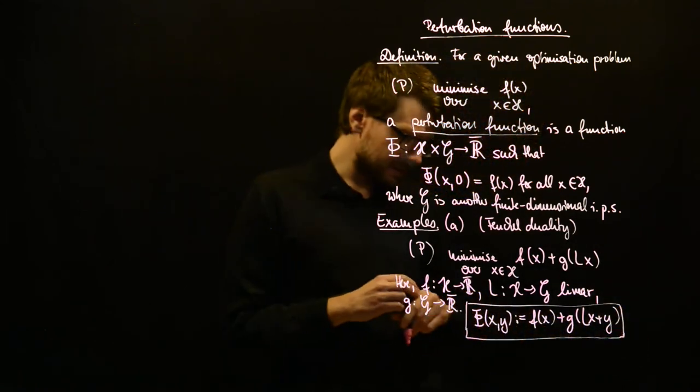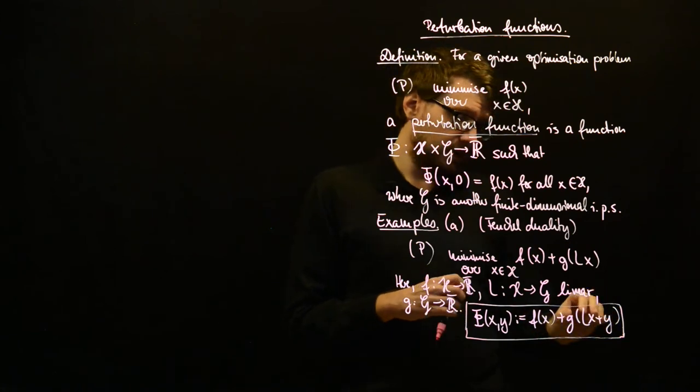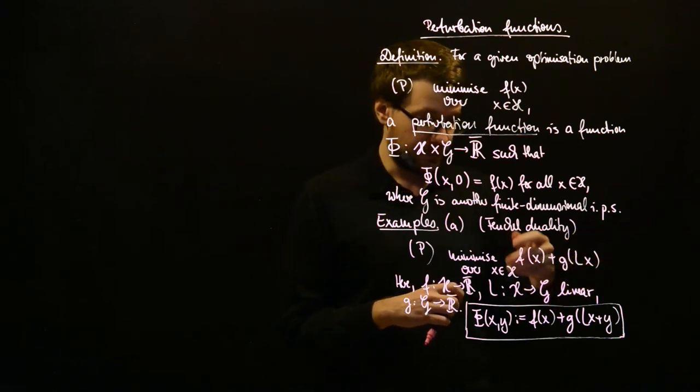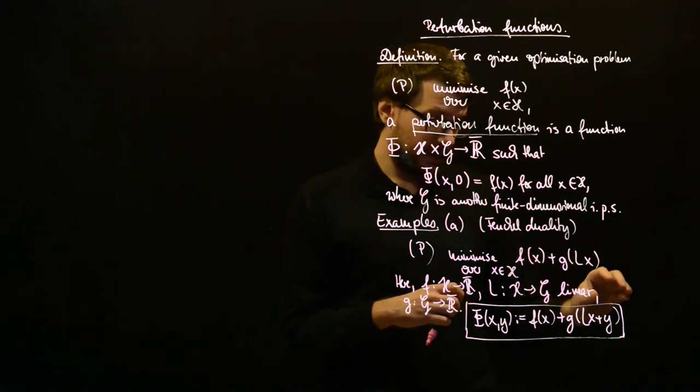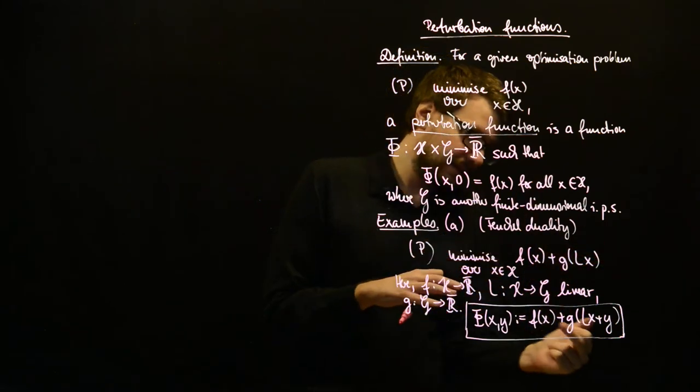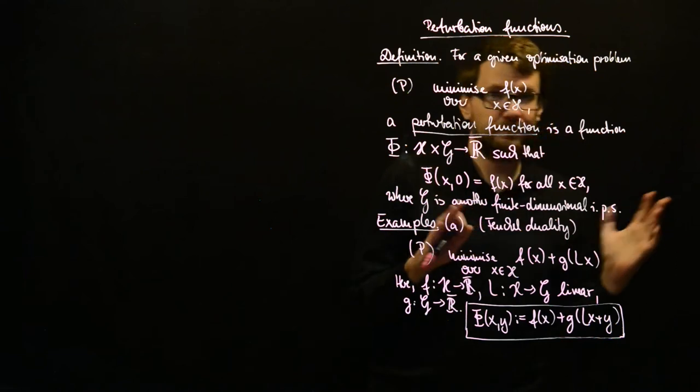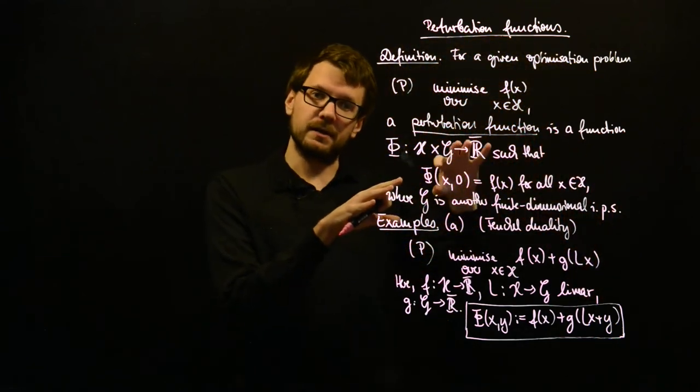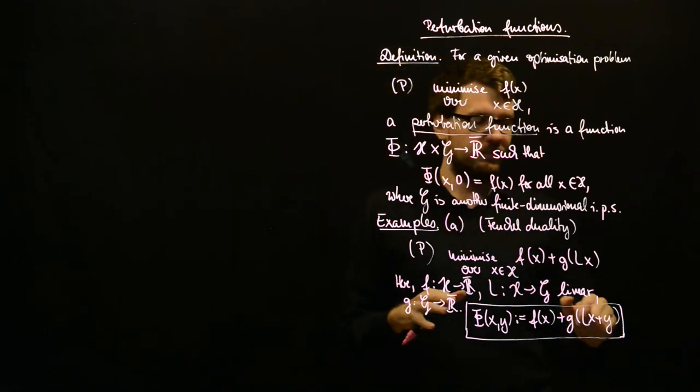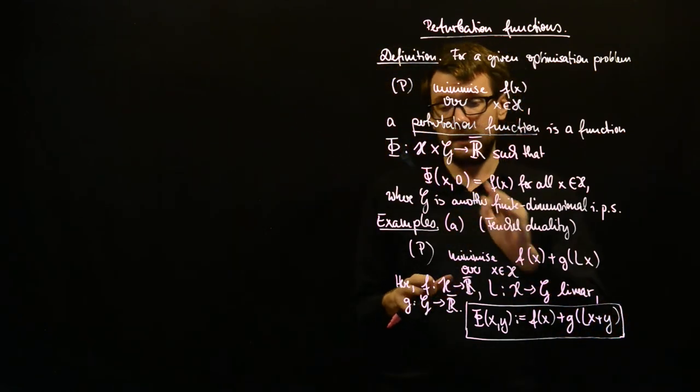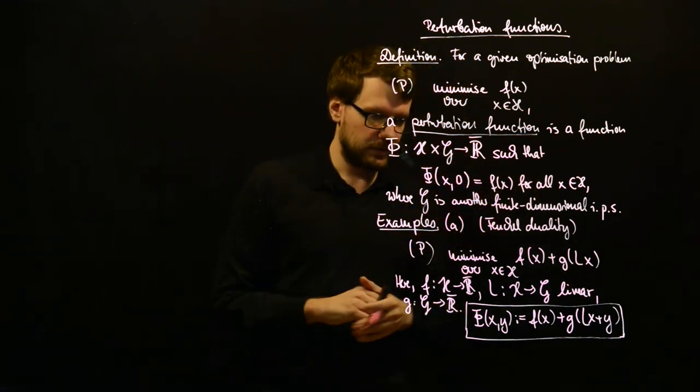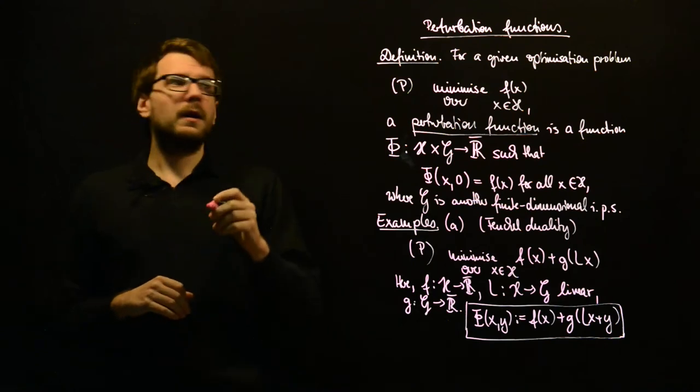And this means the perturbation variable somehow shifts the function g in the space G, and so that the perturbation is basically that you have different inputs to f and g. So, it somehow is able to decouple this once you allow the perturbation variable y to be different from zero. That's the kind of notion behind this.